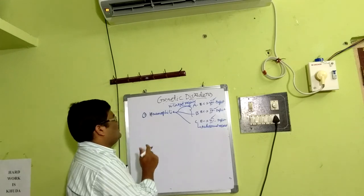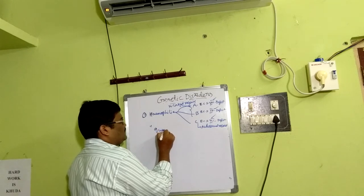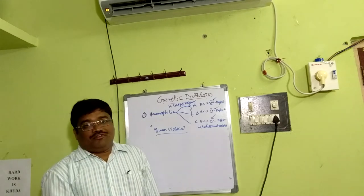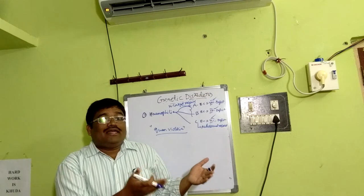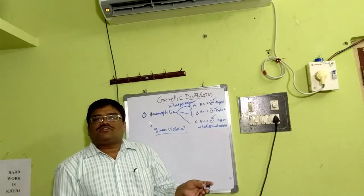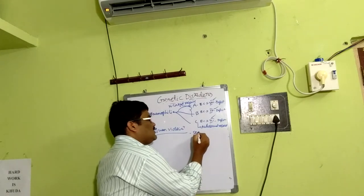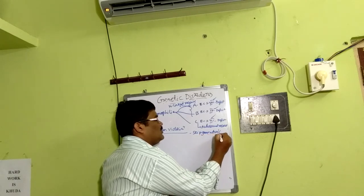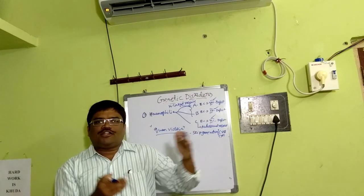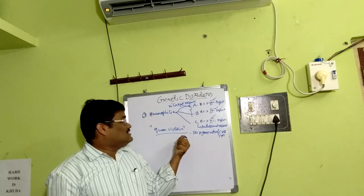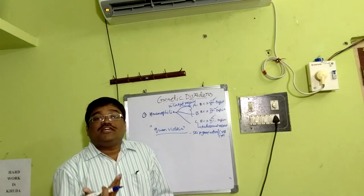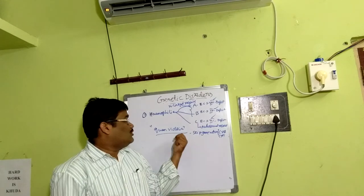A classical example is Queen Victoria of Britain, who was a carrier of hemophilia. Since hemophilia A and B are X-linked recessive disorders, females in heterozygous condition are carriers. This leads to criss-cross or skip-generation inheritance — the disorder is inherited from grandfather to grandson via an F1 generation female. If we draw Queen Victoria's family pedigree chart, several hemophilia descendants appear because of her carrier nature.